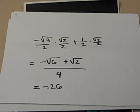Now, after replacing the cosine and sines with their corresponding values, we get negative root 3 over 2 times root 2 over 2 plus 1 over 2 times root 2 over 2. Solving that, we get negative root 6 plus root 2 all over 4, which is approximately negative 0.26.